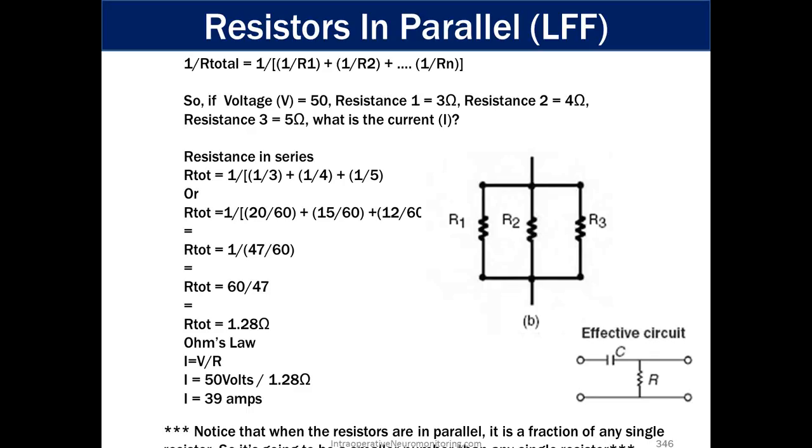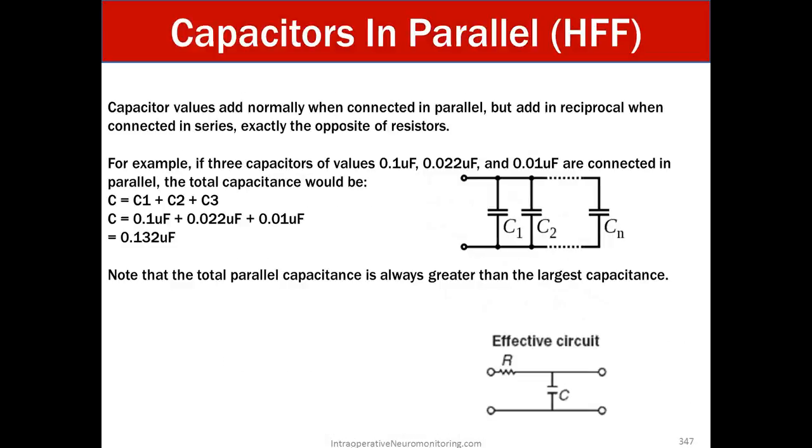Capacitors in parallel. Opposite of resistors in parallel. So for the high frequency filters, capacitor values add normally when connection in parallel, but add in reciprocal when connections in series exact opposite of resistors. For example, if three capacitors of value of 0.1 micro, and I honestly forgot what F is, 0.022 UFs and 0.01 UFs are connected in parallel, the total capacitance would be capacitor equals capacitor 1 plus 2 plus 3. Add those three sums together and you get 0.13. Note that the total parallel capacitance is always greater than the largest capacitance.